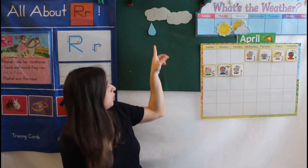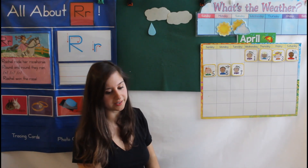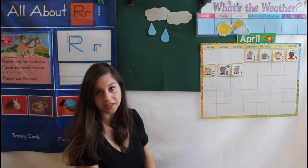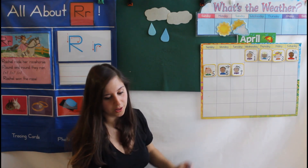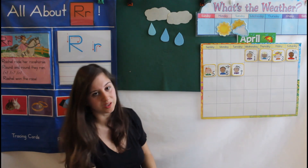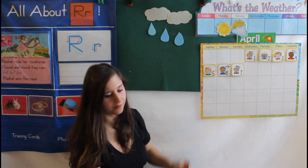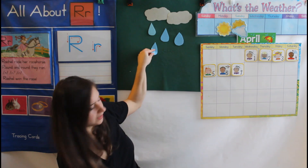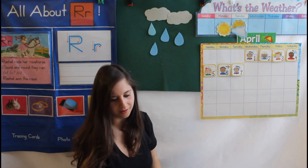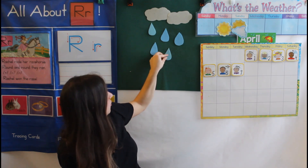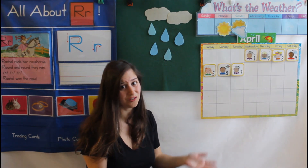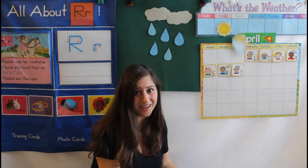One little raindrop in the dark, dark sky. Two little raindrops. Watch the clouds roll by. Three little raindrops go splat splat splat splat. Four little raindrops — well, we'll need boots for that. Five little raindrops and still no sun? That's too much for us. I guess we better run.